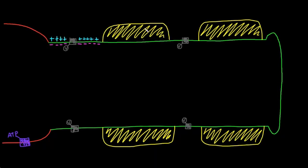The myelin sheath makes the membrane much, much thicker, because it is just membrane that's wrapped around the neuron membrane many, many times. So now you have a really thick membrane. In terms of a capacitor, the distance is now much greater between the opposite charge ions on either side of the myelin sheath membrane. While they're still attracting each other — a cation on the outside and an anion on the inside — the strength of this attraction is much less because the distance between these ions is much farther.